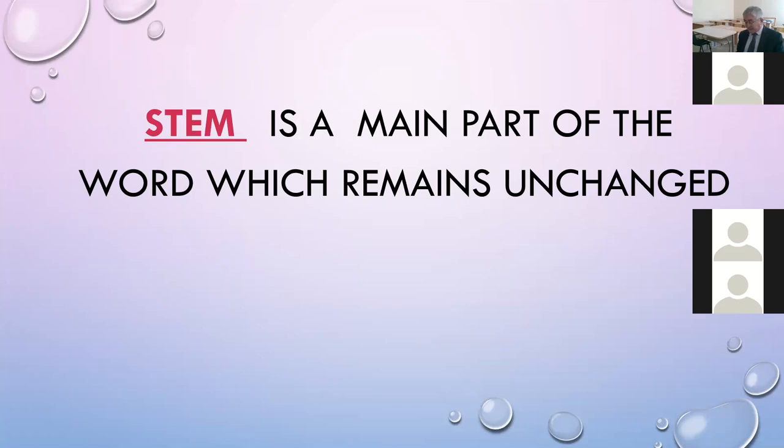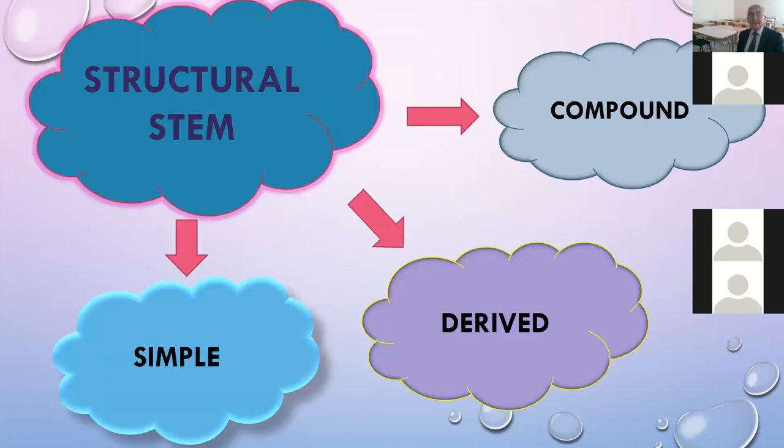There are three structural types of stems: simple, derived, and compound.